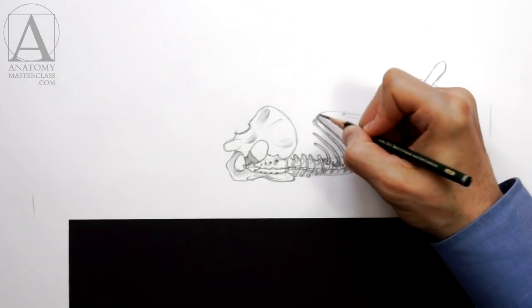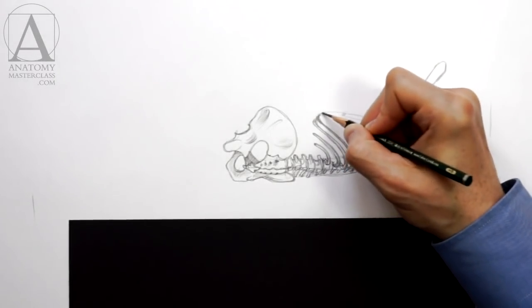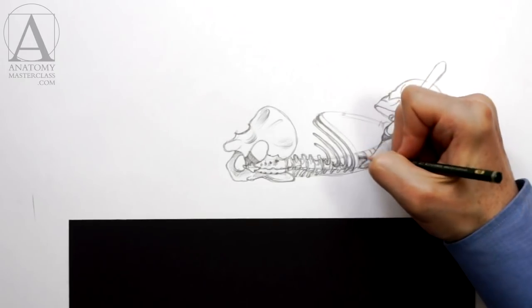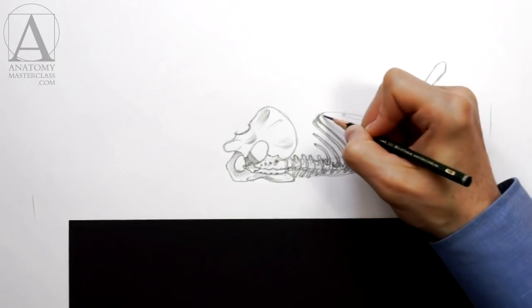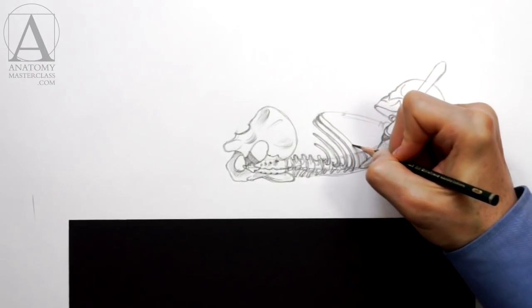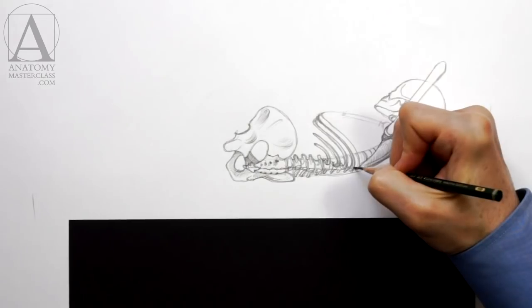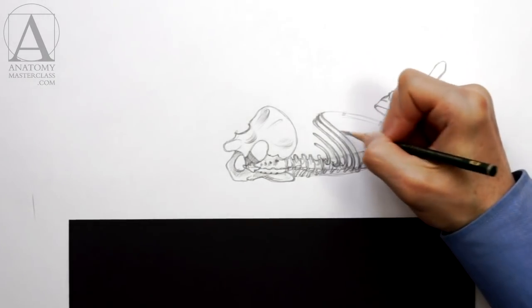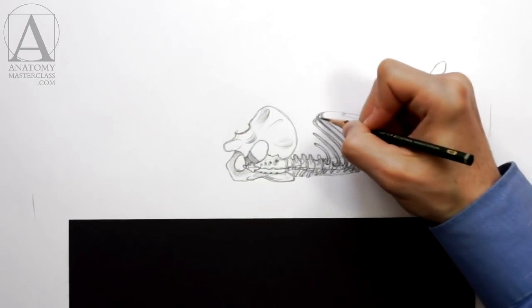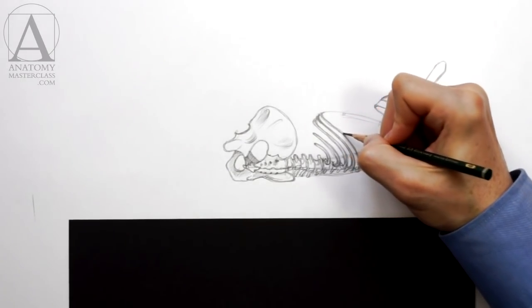The eighth, ninth, and tenth ribs are false ribs. This comes from the fact that they are not attached to the breastbone directly, but instead, in the front, they are connected to the costal cartilage of the previous rib.